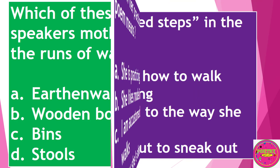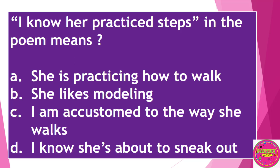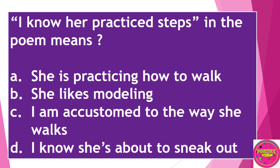"I know her practice steps" in the poem means: A. She is practicing how to walk. B. She likes modeling. C. I am accustomed to the way she walks. D. I know she is about to sneak out. The correct answer to this question is C — I am accustomed to the way she walks.